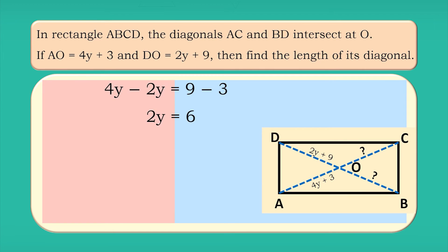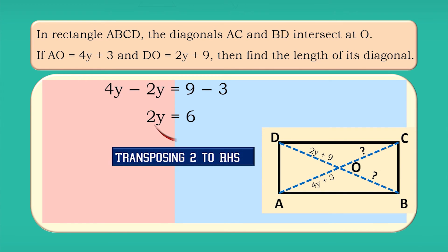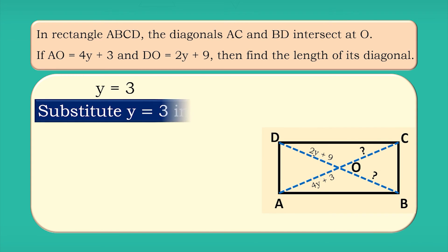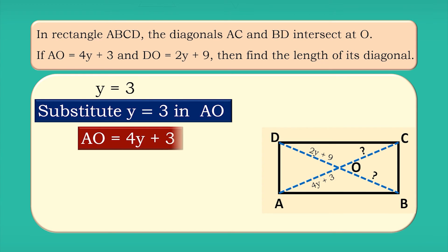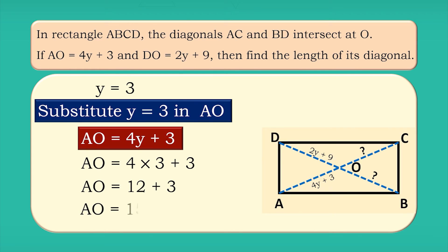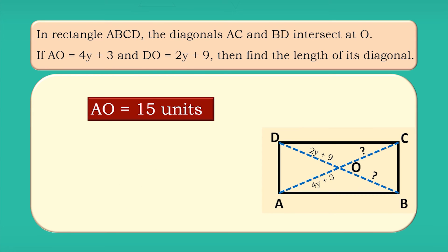That is, 2y = 6. Transposing 2 to the right-hand side, therefore y = 6 ÷ 2 = 3. Substituting the value y = 3 into AO: AO = 4y + 3 = 4 × 3 + 3 = 12 + 3 = 15. That is, AO equals 15 units.